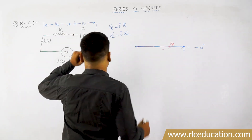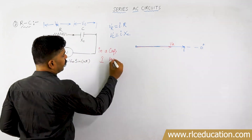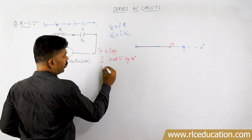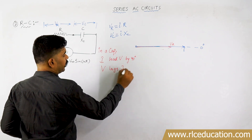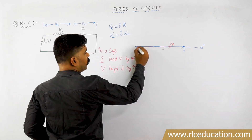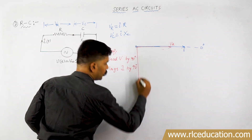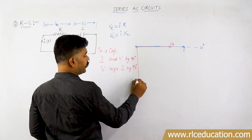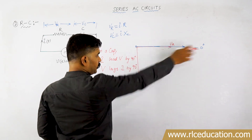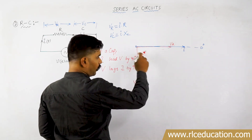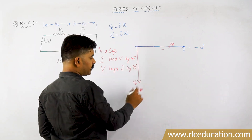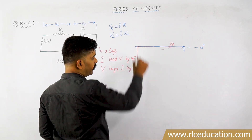In a capacitor, current leads voltage by 90 degrees, or equivalently, voltage lags current by 90 degrees. So the voltage across the capacitor, Vc, lags the current by 90 degrees — it is at minus 90 degrees. So we have Vr along 0 degrees and Vc along minus 90 degrees. The angle between them is minus 90 degrees.